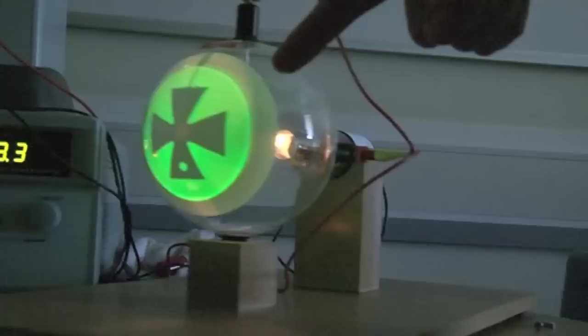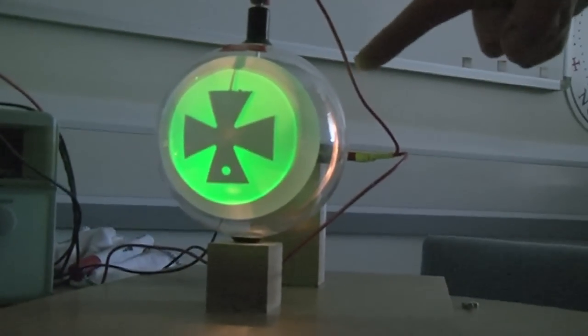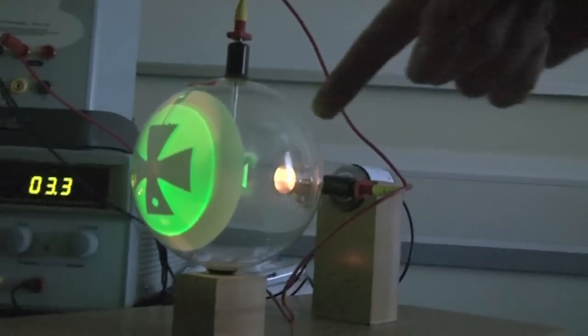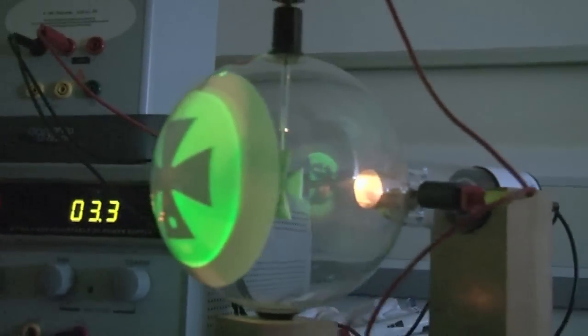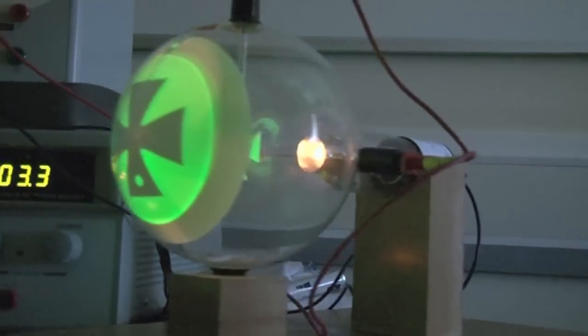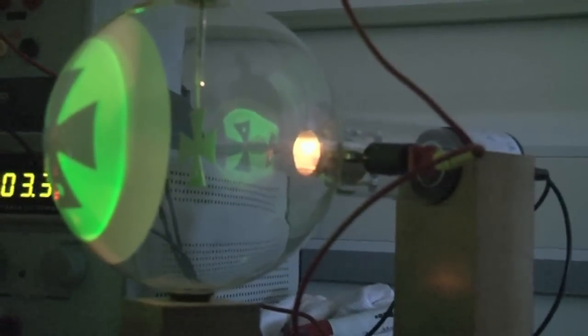If we turn up the high tension supply, we can see the green glow, the phosphorescence, which is caused by the high speed electrons - we're seeing the ones that have missed the target and are hitting the phosphor. We get a shadow of that cross, which is why it's called the Maltese cross experiment.